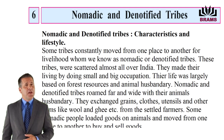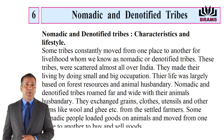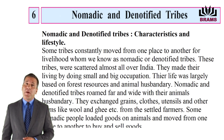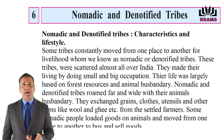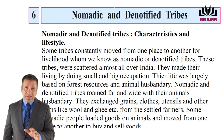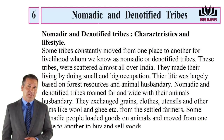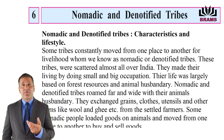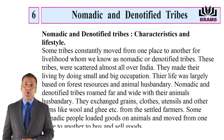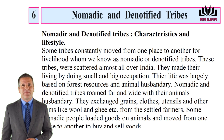Nomadic and Denotified Tribes: Characteristics and Lifestyle. Some tribes constantly moved from one place to another for livelihood, whom we know as nomadic or denotified tribes. These tribes were scattered almost all over India. They made their living by doing small and big occupations. Their life was largely based on forest resources and animal husbandry. Nomadic and denotified tribes roamed far and wide with their animals. They exchanged grains, clothes, utensils and other items like wool and ghee with settled farmers. Some nomadic people loaded goods on animals and moved from one place to another to buy and sell goods.